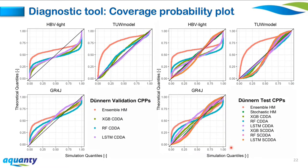The coverage probability plot for the Dünnern catchment shows: ensemble hydrological models with sharp simulations (S-shaped curve) tend to produce CDDAs with similarly sharp simulations; CDDAs lying close to the bisector have corresponding SCDDAs that are less reliable — consistent with the table results. Importantly, all stochastic framework simulations result in either large or reliable simulations. Since reliable and conservative simulations are of high importance for many water resource applications, the stochastic framework may be a useful tool.